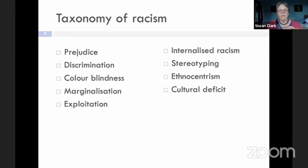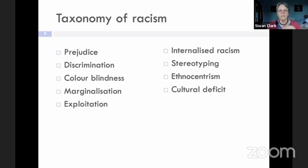Just very briefly — I'm not going to go through this in full — but there is a taxonomy of racism which anybody who's worked in this field will be very familiar with. Colour blindness is actually being blind to different need; marginalisation is seeing black people as not really part of the mainstream, et cetera. And really this kind of taxonomy you can turn over and apply to any group: people with disability, women, any group really who experience discrimination.